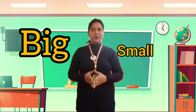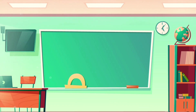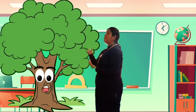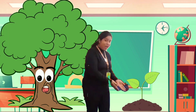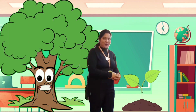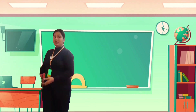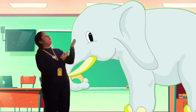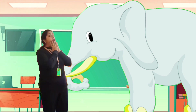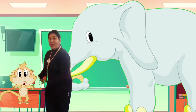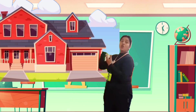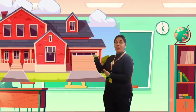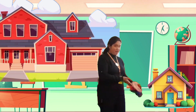The first concept is big and small. This tree is so big and the plant is so small. This elephant is so big and the monkey is so small. The house is so big and the hut is so small.